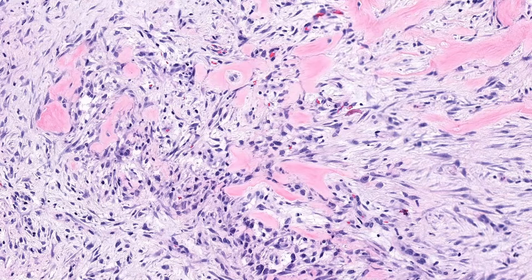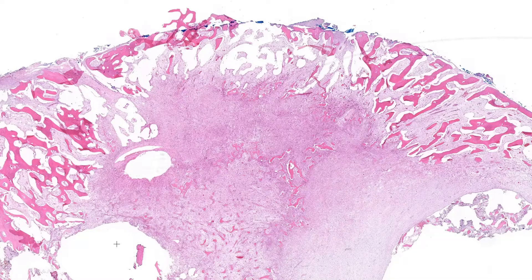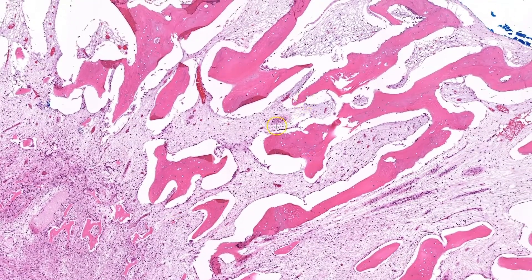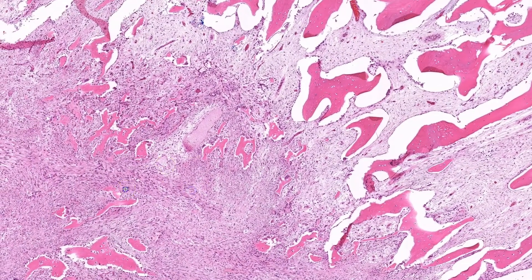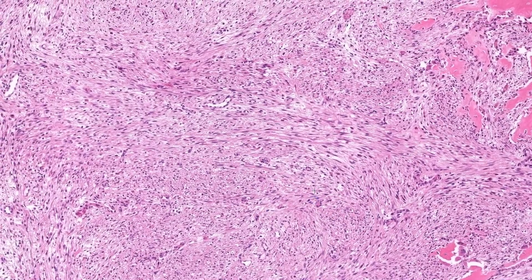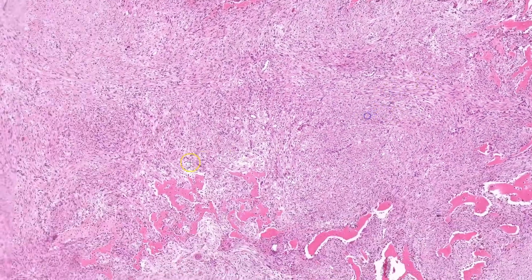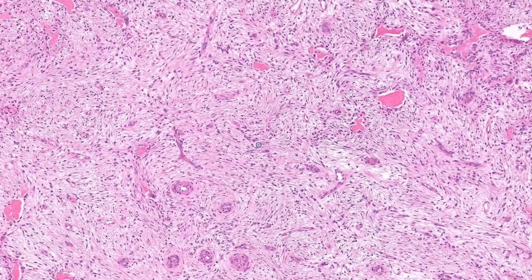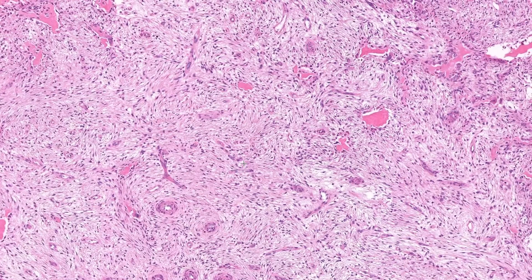This one is tricky, especially on biopsy, but to give you a better sense of this entity, I'm going to show an excision specimen. The key feature here is zonation. At the periphery, we have the well-formed trabeculae of mature lamellar bone, and then moving in towards the center, this transitions into woven bone, with the center of the lesion being composed of this myofibroblastic proliferation. Some areas can be more cellular; however, other areas have that loose tissue culture-like appearance, which can be seen in other USP6-rearranged tumors.